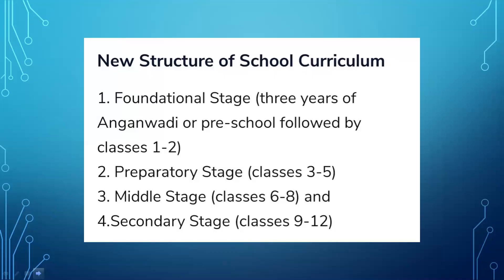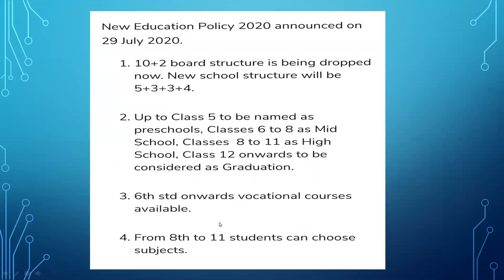The old 10+2 board structure is being dropped. The new school structure will be 5+3+3+4. Up to class five will be named pre-school classes; class six to eight as mid school; class eight to eleven as high school; and class twelve onward to be considered as graduation.